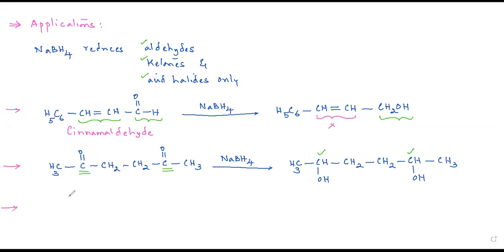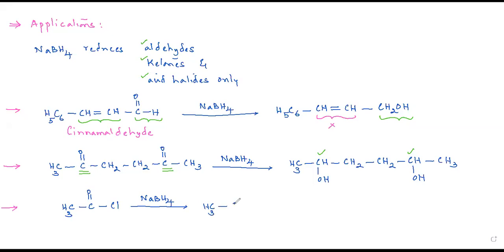Now let us consider an acid halide. When an acid halide is reduced using sodium borohydride, we get an alcohol.